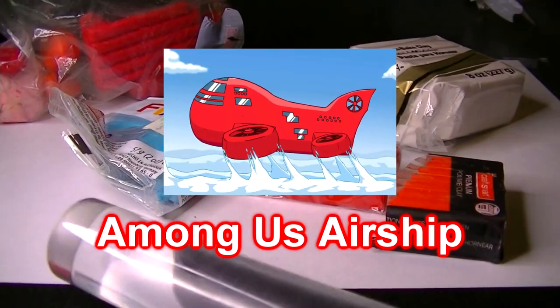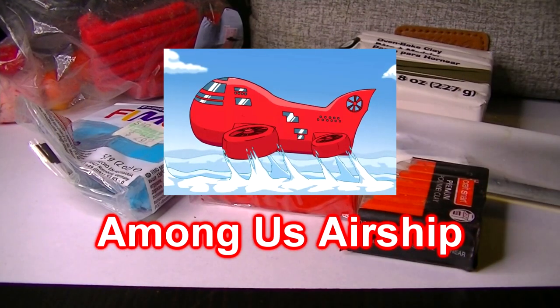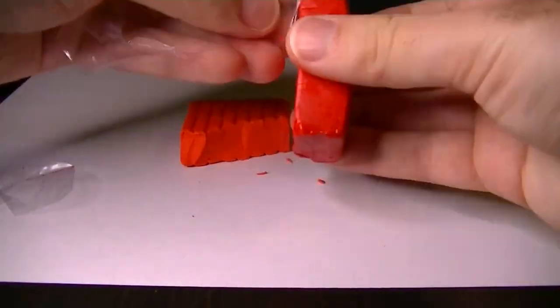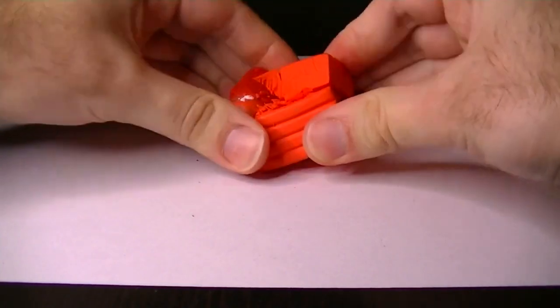Alright, today we're going to be making the Among Us airship with polymer clay. So I'm starting off by mixing some leftover chunks of red clay, which we're going to use for the main body of the airship.